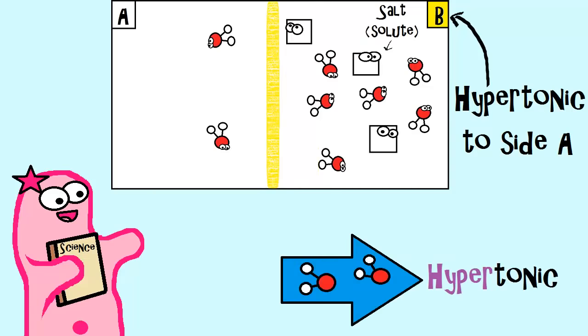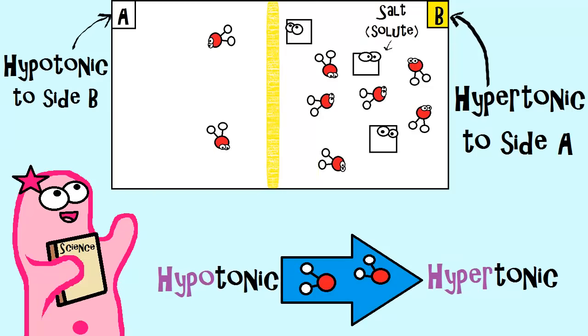In osmosis, water moves to the hypertonic side. We say side A is hypotonic. Hypo rhymes with low, which helps me remember that it's a lower solute concentration, at least when compared to side B.